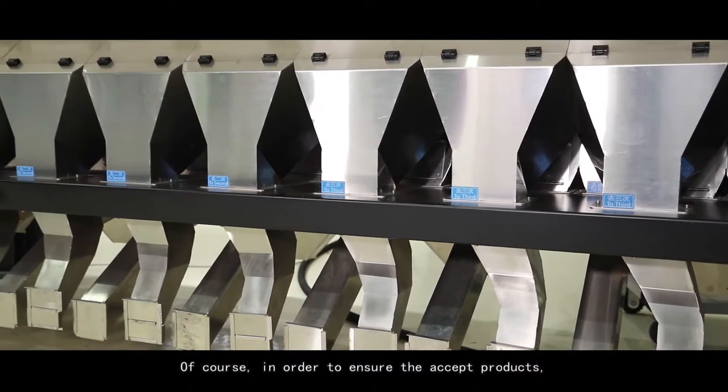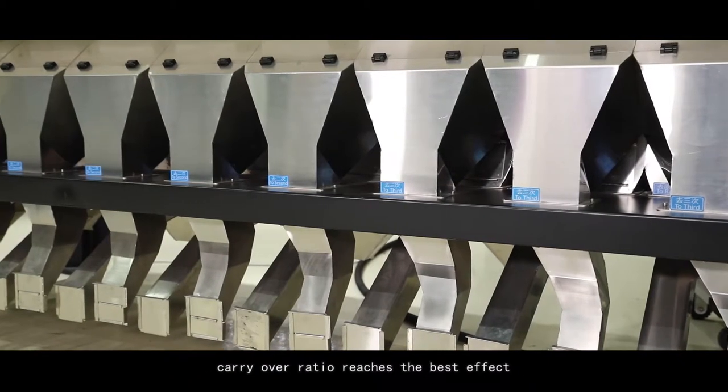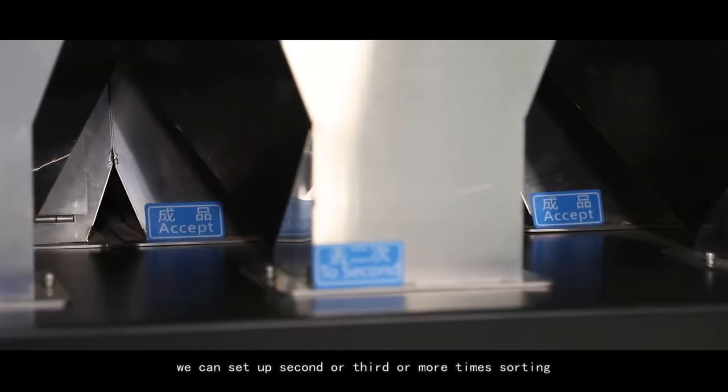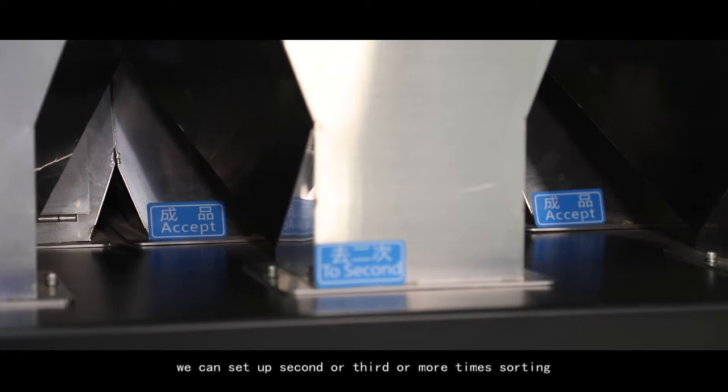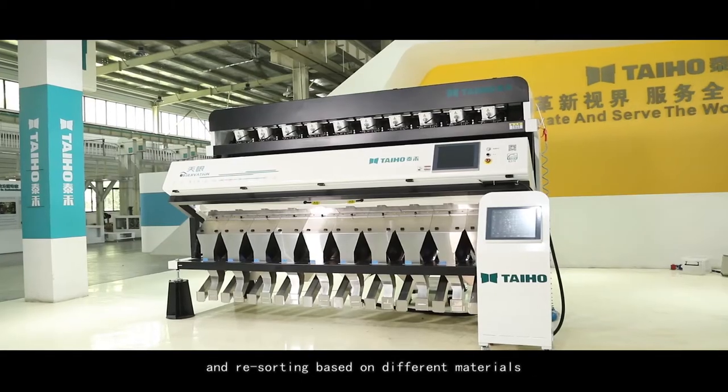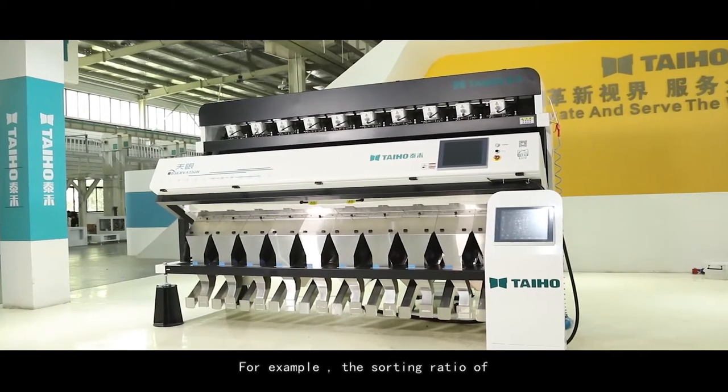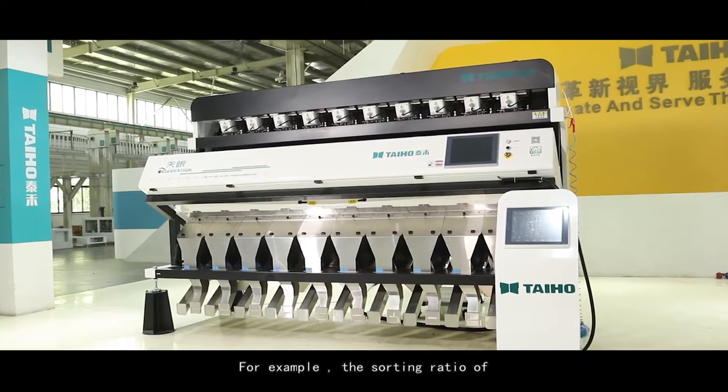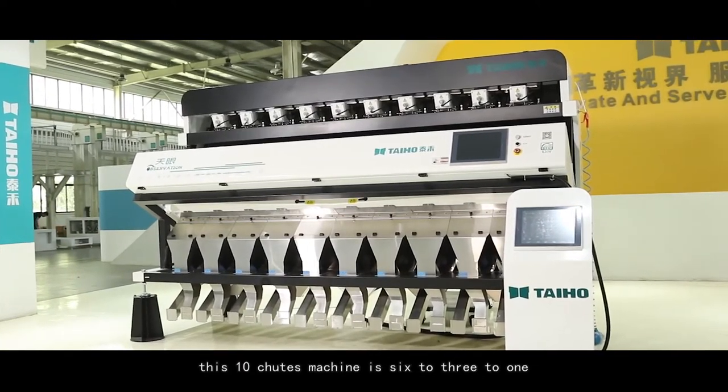Of course, in order to ensure the accept products carry over ratio reaches the best effect, we can set up second or third or more time sorting and resorting based on different materials. For example, the sorting ratio of this 10 shoots machine is 6 to 3 to 1.